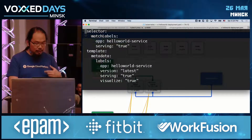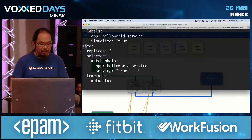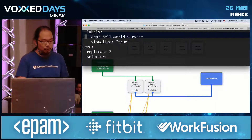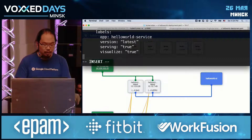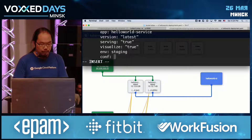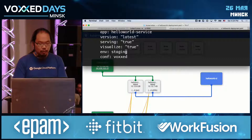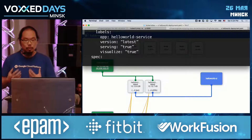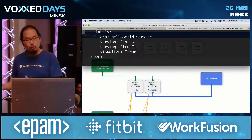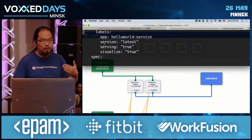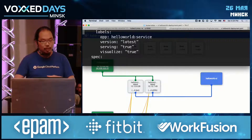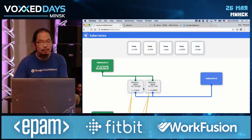One thing that's very important is that every one of these application instances has something called labels. Labels are really, really important in Kubernetes — they're just key-value pairs. You can say environment is staging, or conference is vox day. You can use them later to help you query and ask Kubernetes what is actually running in your environment, like give me everything matching the label app equals a certain service.